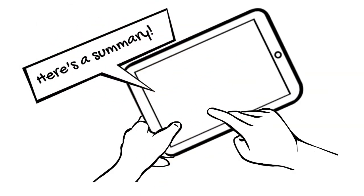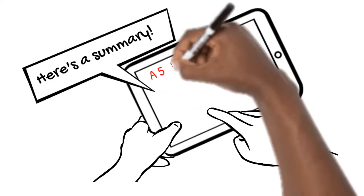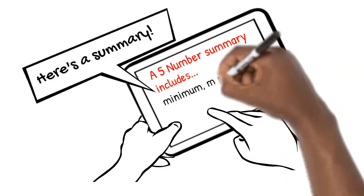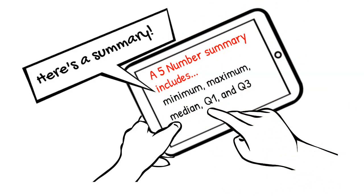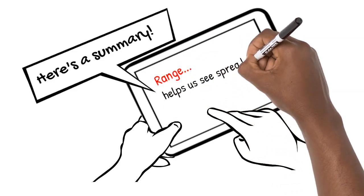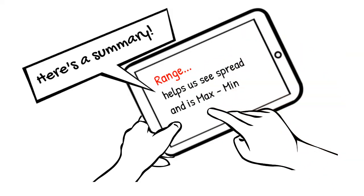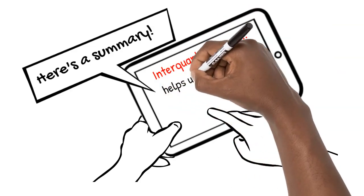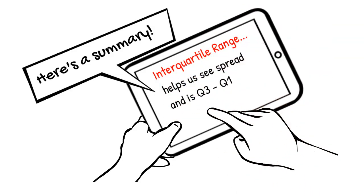Here's a summary of what we've learned. A five-number summary includes a minimum, maximum, median, lower quartile, and upper quartile. Range helps us to see the spread of data and is found by subtracting the minimum from the maximum. Interquartile range also helps us take a deeper look at the spread of data and is found by subtracting the lower quartile from the upper quartile.